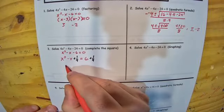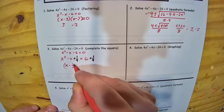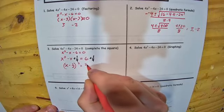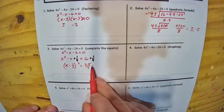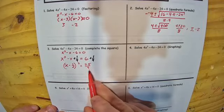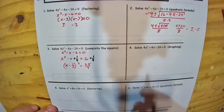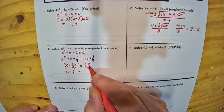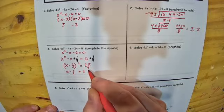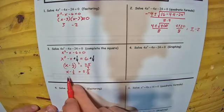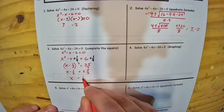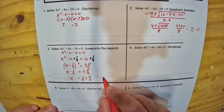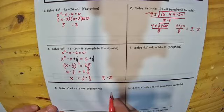Once we've done that, the left side can be written as x minus one half, squared, equals 25 over 4 — that's 6 plus one fourth as an improper fraction. Since 25 and 4 are both perfect squares, we take the square root of both sides: x minus one half equals positive or negative 5 over 2. Then simply add one half to both sides: x equals one half plus or minus 5 over 2. Solving that gives us positive 3 and negative 2 — the same two solutions.